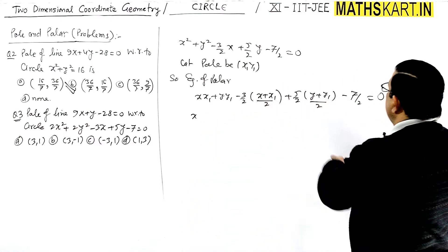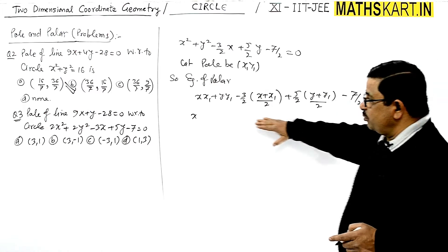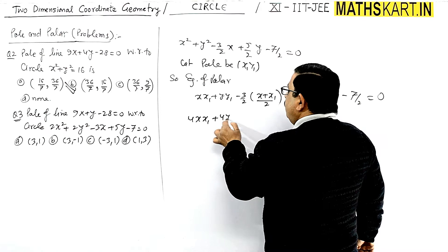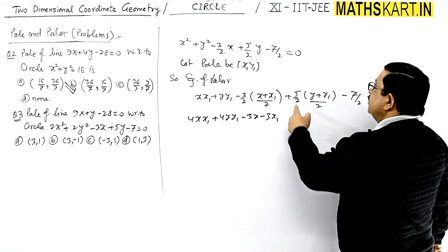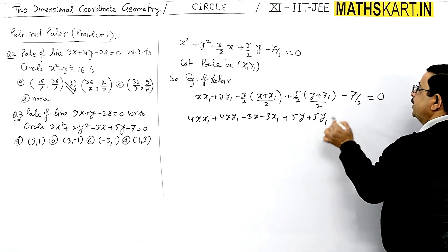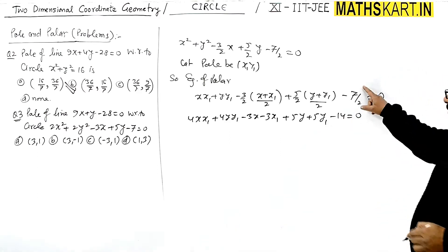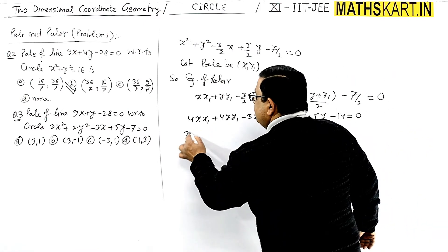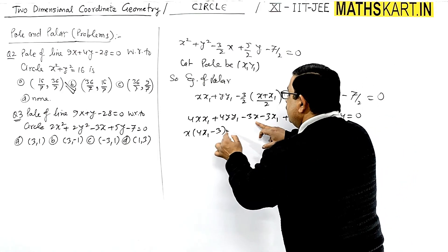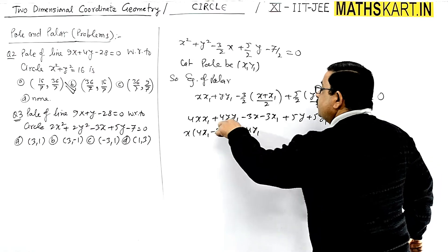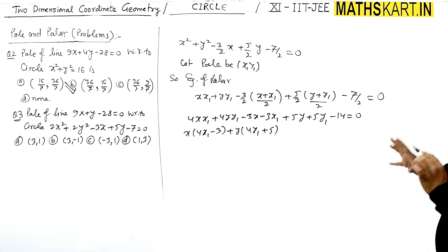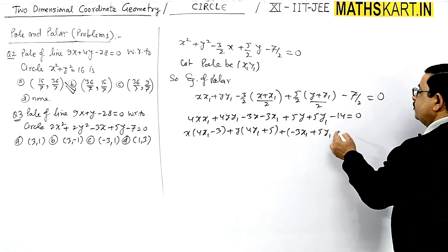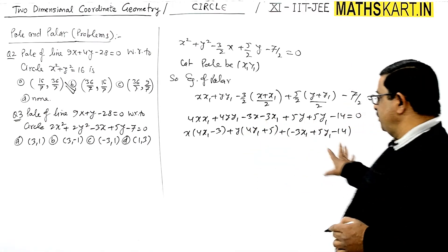It is better to multiply through by 4 to get into proper form. So we get 4xx₁ + 4yy₁ − 3x − 3x₁ + 5y + 5y₁ − 14 = 0. The coefficient of x is (4x₁ − 3), the coefficient of y is (4y₁ + 5), and the remaining terms give the constant: −3x₁ + 5y₁ − 14.